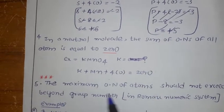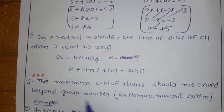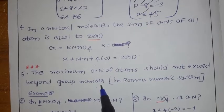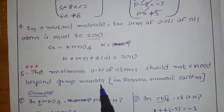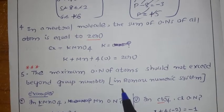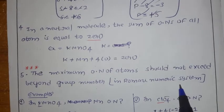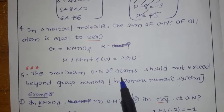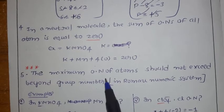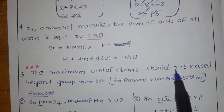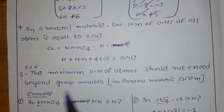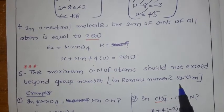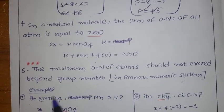The fifth rule: the maximum oxidation number of atoms should not exceed the group number. This is specifically for S and P block elements. So in S and P block elements, the maximum oxidation number should not go above the group number in the Roman numeral system, not the Arabic system. Let us see examples.